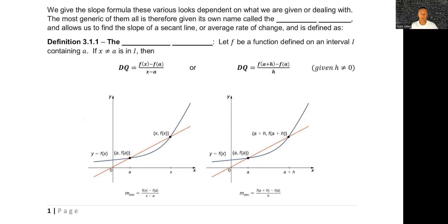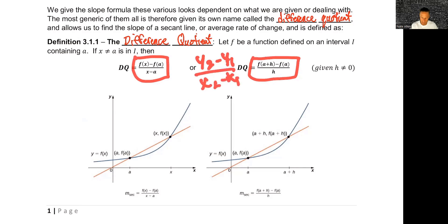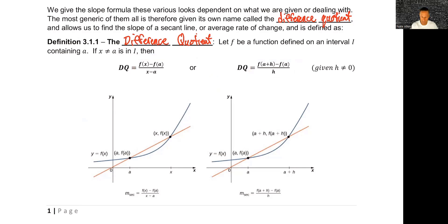One of those forms actually got its own name because we use it so much, and it's called the difference quotient. That takes us to chapter three, section one, definition one. We call the difference quotient either that form or that form — the two that we said we would use in calculus — versus the y2 minus y1 over x2 minus x1 to find our slope. The difference quotient, because that's exactly what it does: it finds the difference of your y's and your x's and divides them.